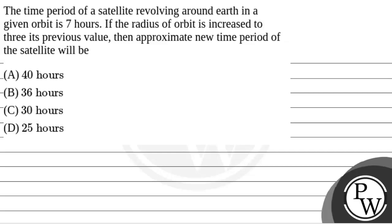Hello Batcho! Let's read the question. The question says that the time period of a satellite revolving around Earth in a given orbit is 7 hours.